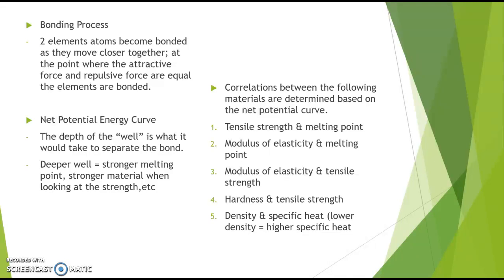Elements are bonded when the attractive force and repulsive force are at an equal balance of zero — that equilibrium is when the elements become bonded together. There is also a net potential energy curve described as having a depth of the well. The greater that net potential energy curve, the more it would correlate with stronger melting points and stronger materials. There's a strong correlation between many materials and elements based on their net potential curve — including strength and melting point, elasticity and melting point, and elasticity and strength.